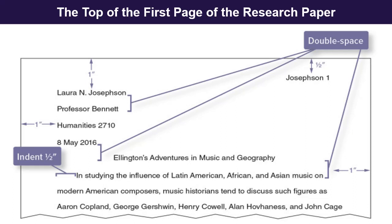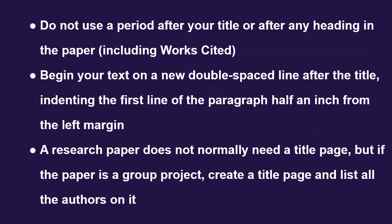This picture shows us how to write a title on the first page of a research paper. Do not use a period after your title or after any heading in the paper, including Works Cited. Begin your text on a new double-spaced line after the title, indenting the first line of the paragraph half an inch from the left margin.